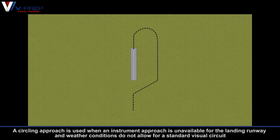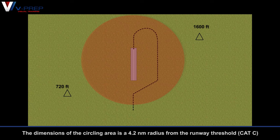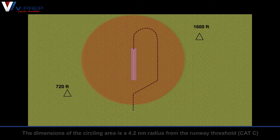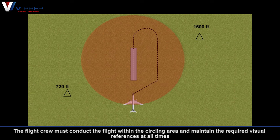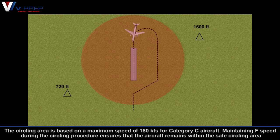A320 Circling Approach. A circling approach is used when an instrument approach is unavailable for the landing runway and weather conditions do not allow for a standard visual circuit. The circling area ensures obstacle clearance. The dimensions of the circling area is a 4.2 nautical mile radius from the runway threshold. The flight crew must conduct the flight within the circling area and maintain the required visual references at all times. The circling area is based on a maximum speed of 180 knots for Category C aircraft. Maintaining F speed during the circling procedure ensures that the aircraft remains within the safe circling area.